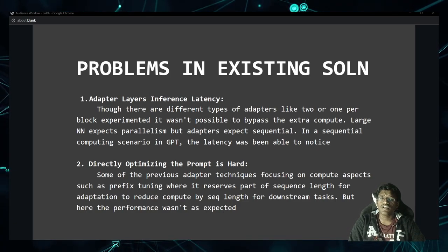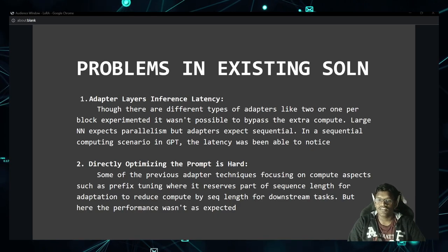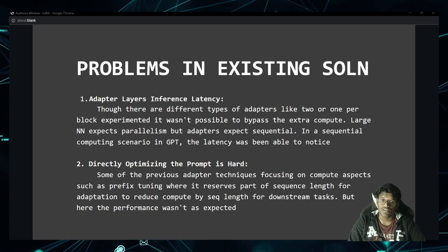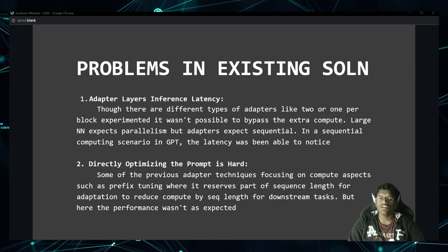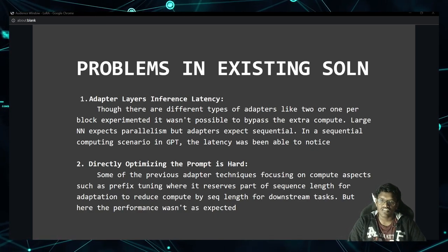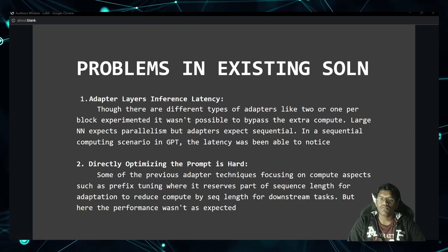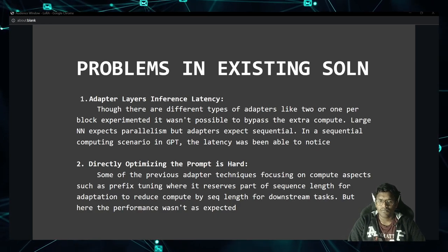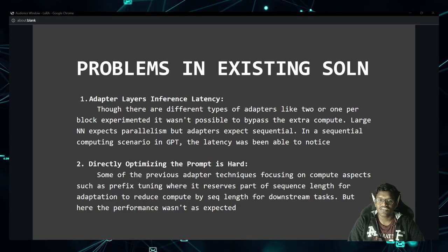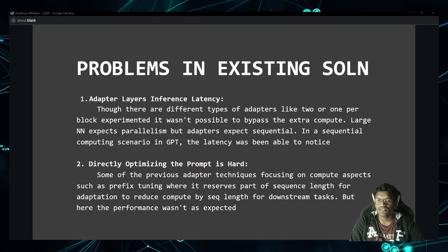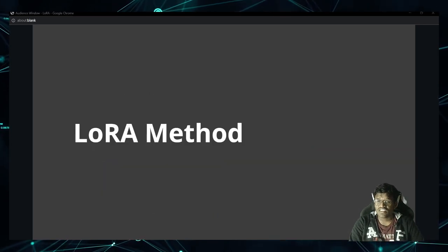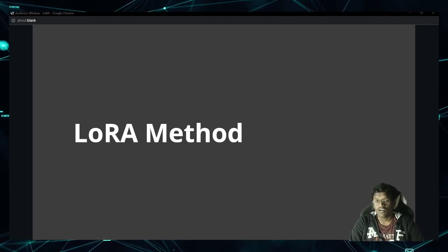The second problem was that directly optimizing the prompt is hard. Some previous adapter techniques focused directly on computation aspects — for example, fine-tuning methods where part of the sequence length is reserved for adaptation. If you have sequence length 256 and reserve 200 for adaptation, you are reducing the sequence length, and obviously the performance is going to degrade. These were key problems in existing adapter solutions.